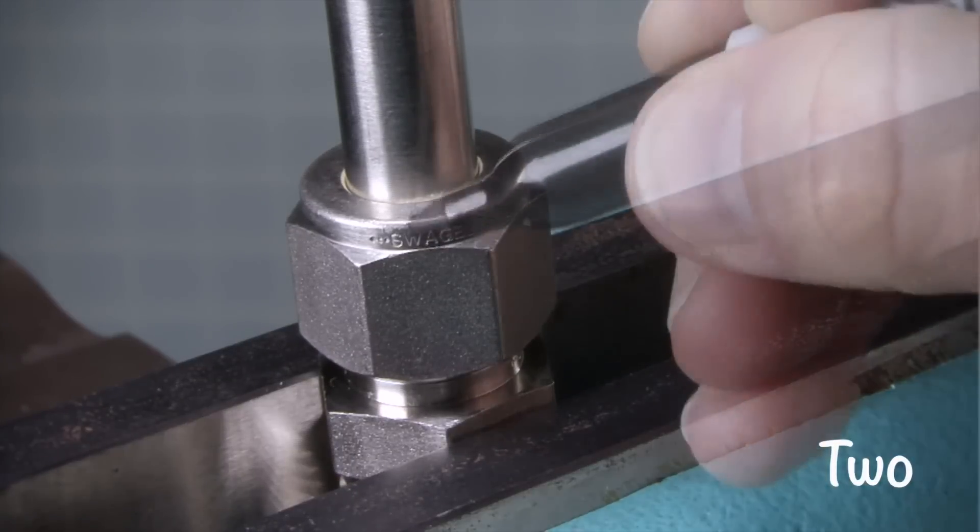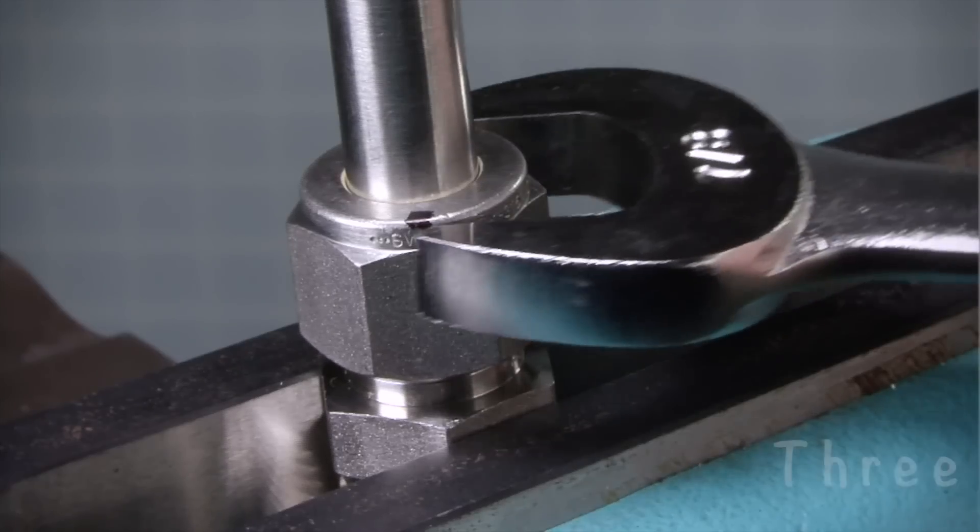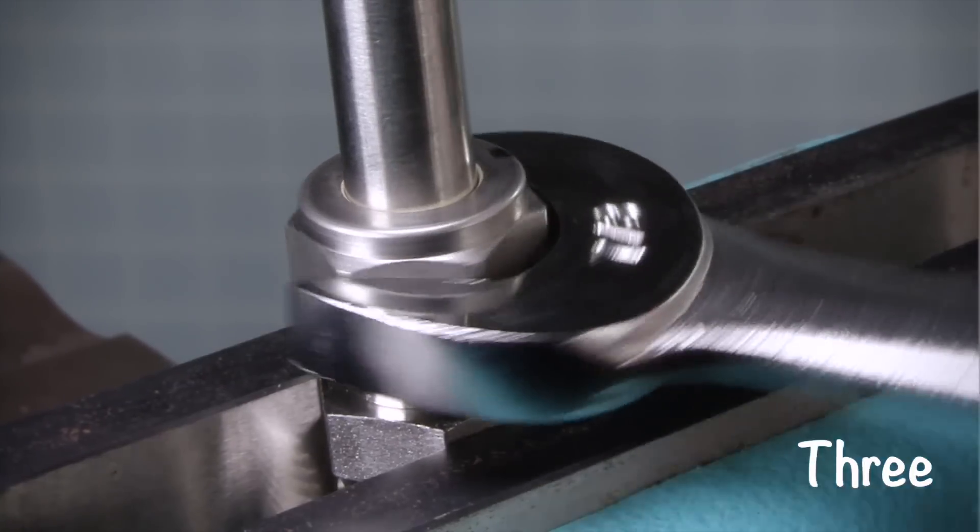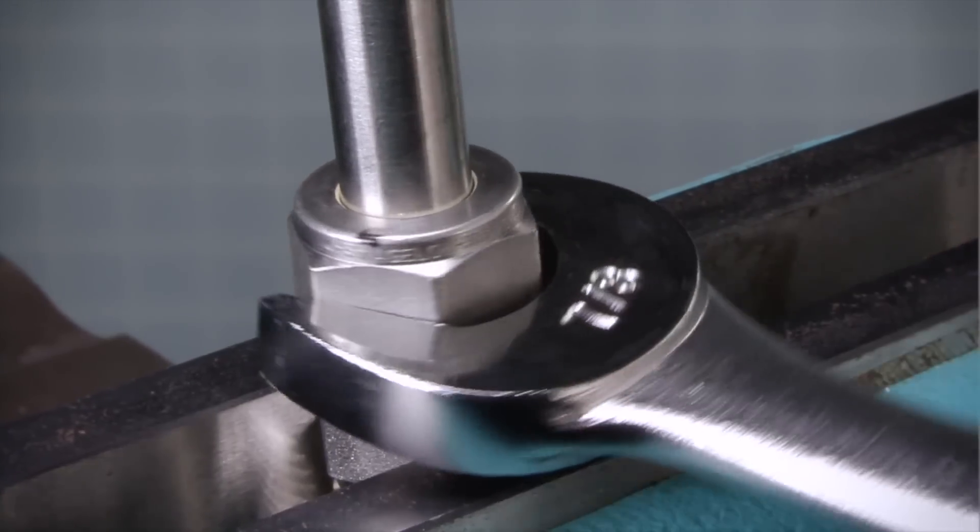Step 2. Mark the nut at the six o'clock position. Step 3. While holding the fitting body steady, tighten the nut one and one quarter turns to the nine o'clock position, and the job is done. That's all there is to it.